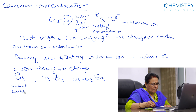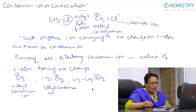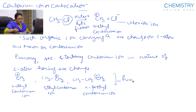These are primary carbon atoms. This is the methyl carbon atom, this is the ethyl carbon atom, and this is the n-propyl carbonium ion — these are all primary carbonium ions.